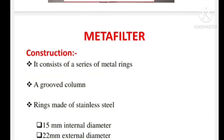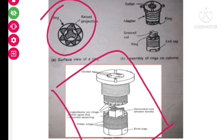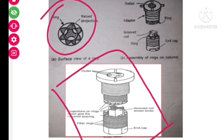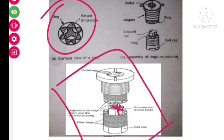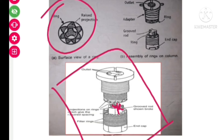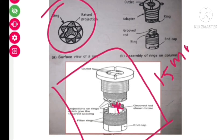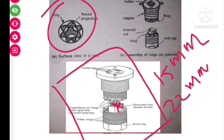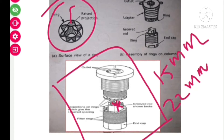Now, moving on to the construction part of metafilter. Here you can see the assembly of metafilter, and this is the surface view of a ring. Metafilter consists of a series of metal rings — one of the major parts — and it contains a grooved column. Stainless steel is the material used to construct the ring. This ring has a 15 mm internal diameter, 22 mm external diameter, and each ring has semi-circular projections.